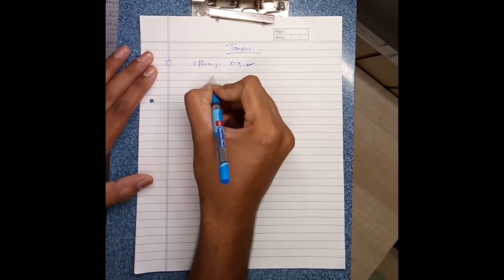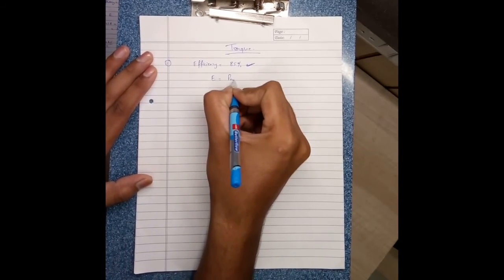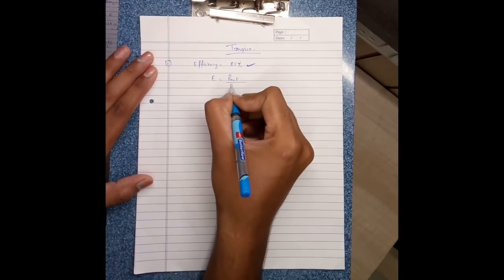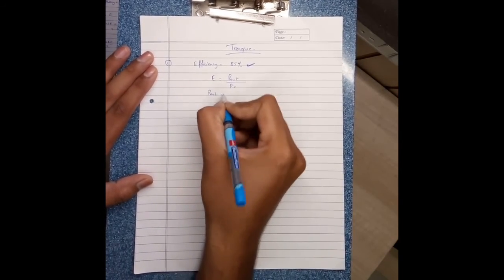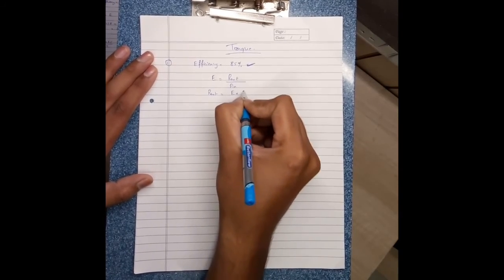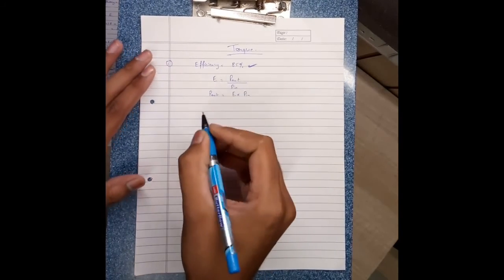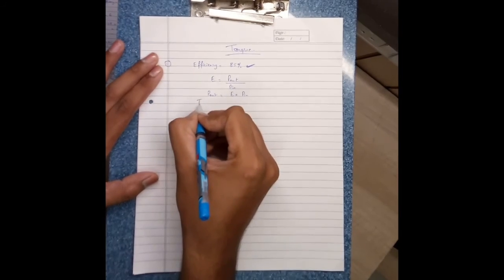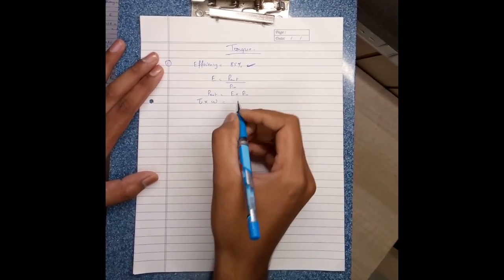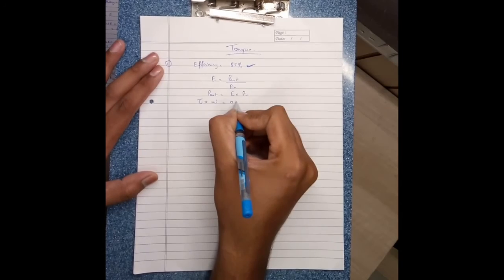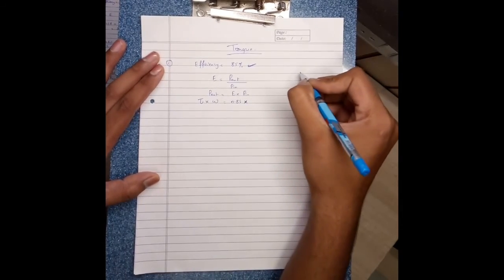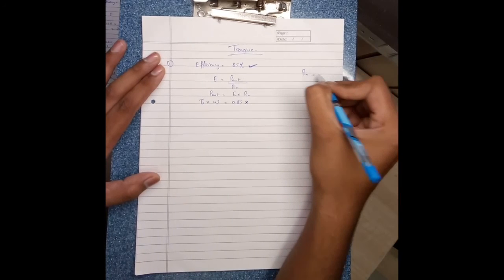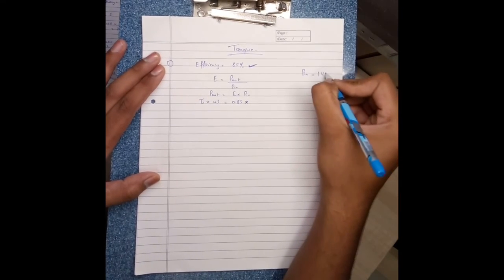Efficiency equals power output divided by power input. Power output equals efficiency times power input. Power output also equals torque times angular speed. With efficiency 0.85 and power input, power output comes to 1458 watts.